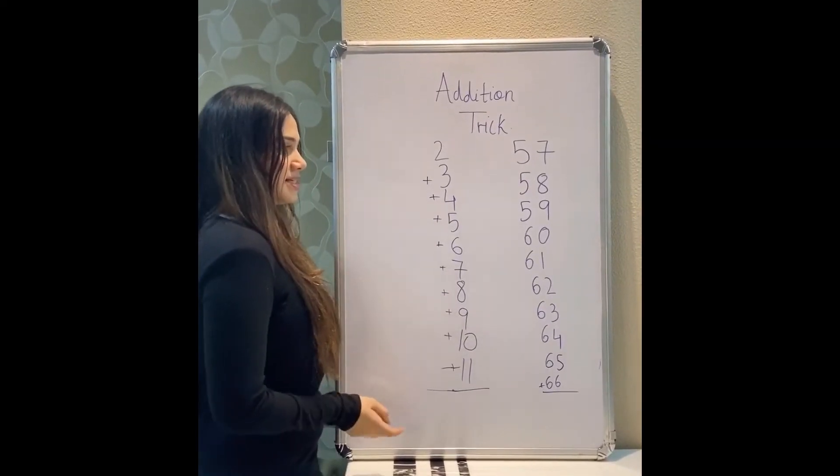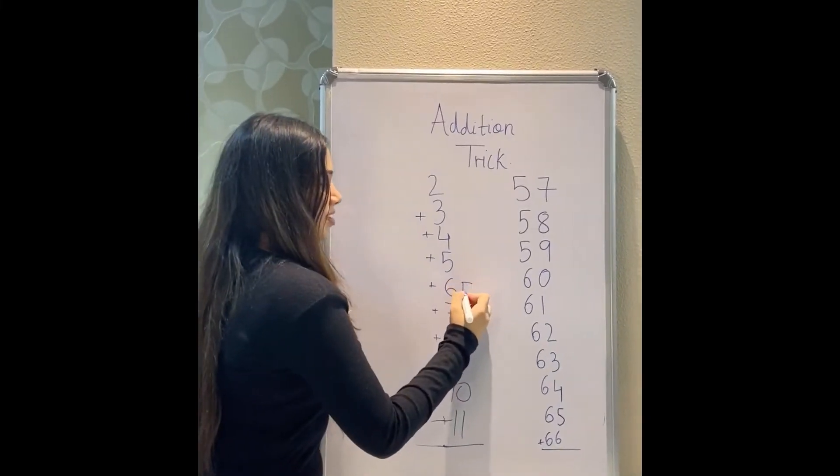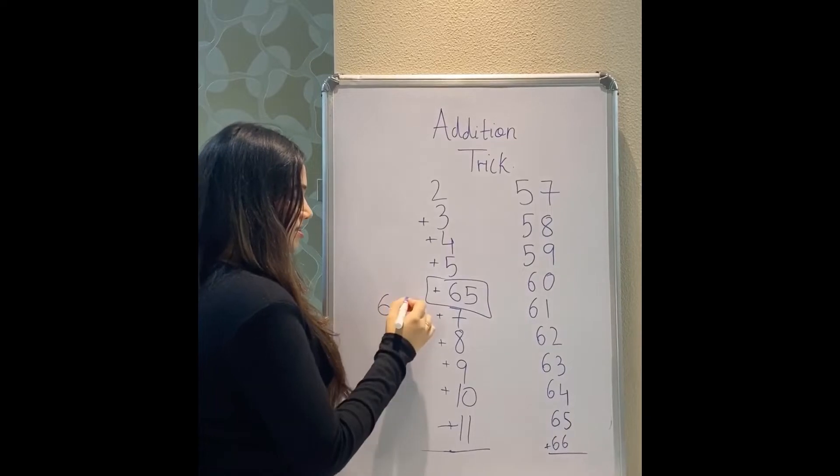All you have to do is, you have to take the 5th number. 1, 2, 3, 4 and 5. 5th number and just put a 5 next to it. That's my answer, 65.